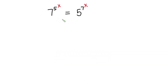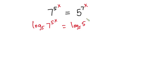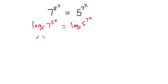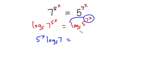First I'm going to introduce log in base 5 on both sides of the equation. So we have log base 5 of 7 to the power 5 to the power x is equal to log base 5 of 5 to the power 7 to the power x. Now let's move the 5 to the power x to the front, so we have 5 to the power x times log base 5 of 7 is equal to — and I'll move the 7 to the power x to the front as well.